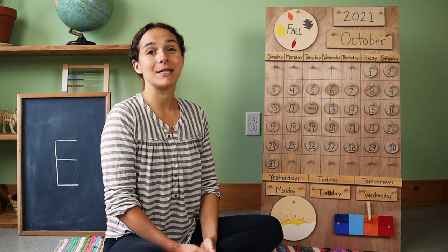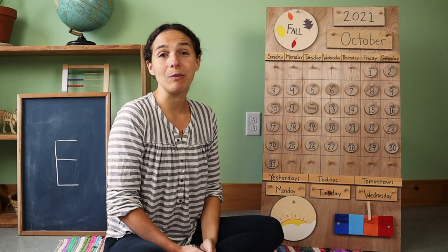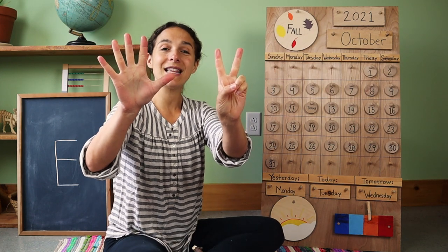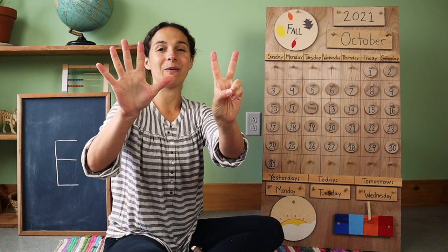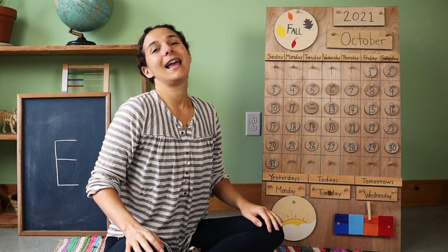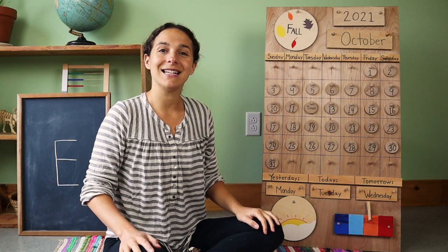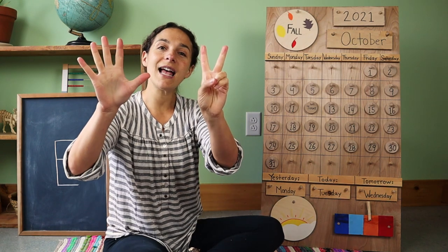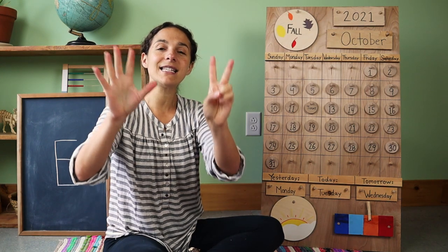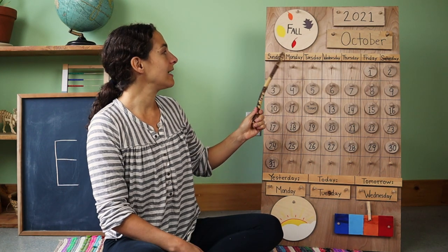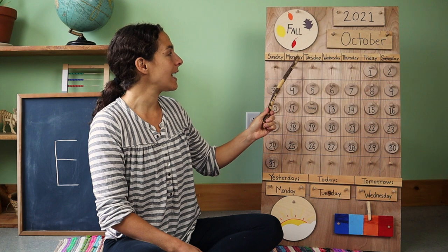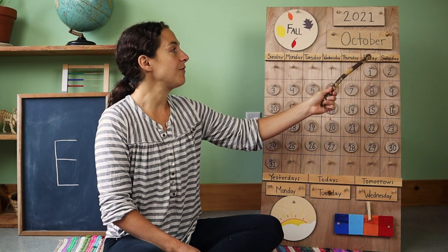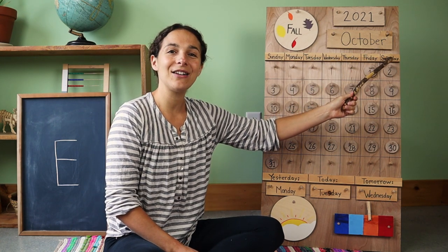And now it's time to sing the Days of the Week song. So let's hold up seven fingers like this for each one of the days of the week. There are seven days, there are seven days, there are seven days in a week. Sunday, Monday, Tuesday, Wednesday, Thursday, Friday, Saturday.